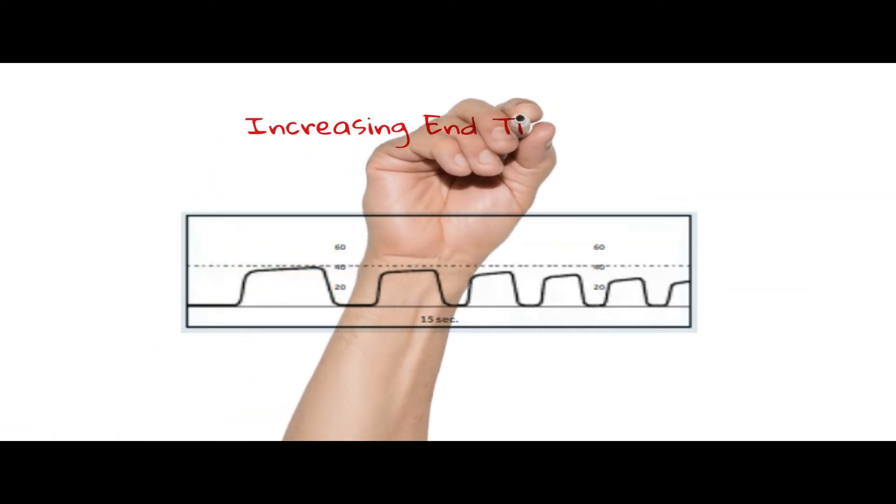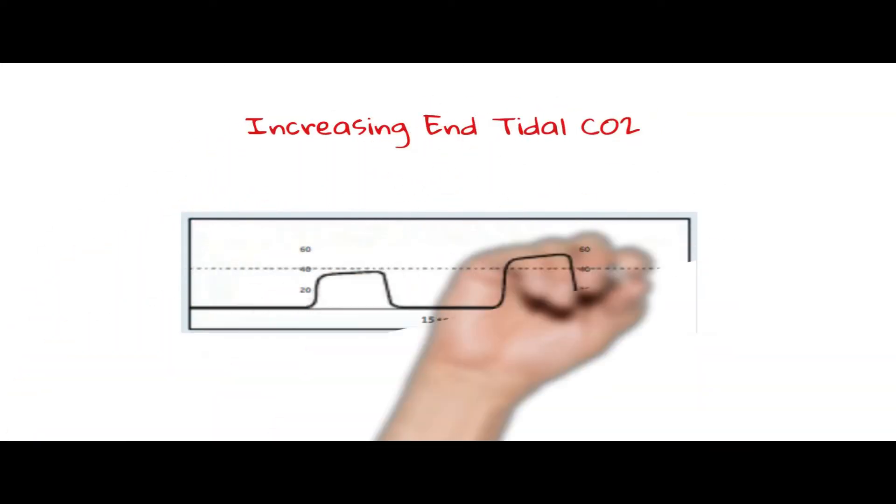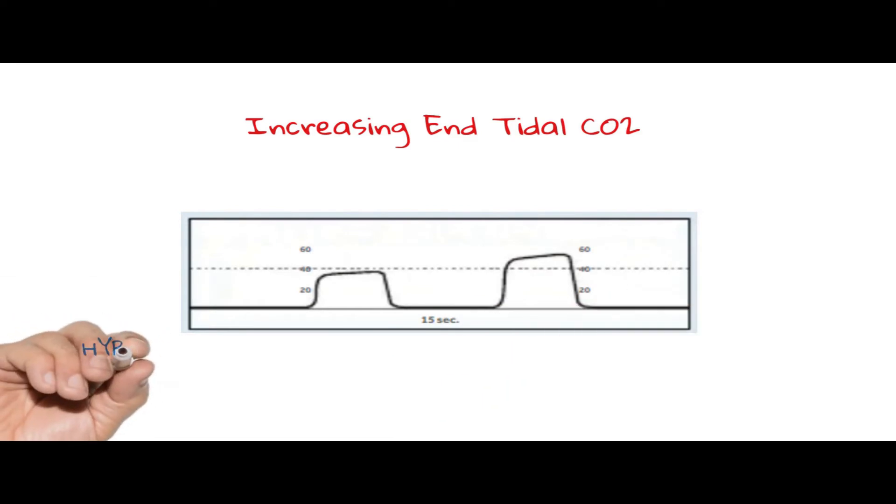Increasing end tidal CO2 is usually the result of hypoventilation. This may be the result of an intentional choice by the healthcare practitioner. Unintentional hypoventilation should be corrected by adjusting ventilation parameters. Increasing core temperature and metabolism may also lead to increasing end tidal CO2.